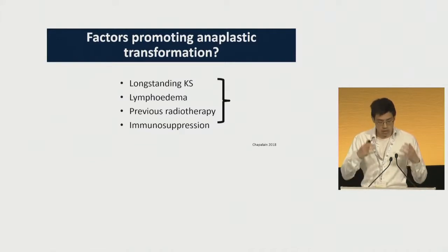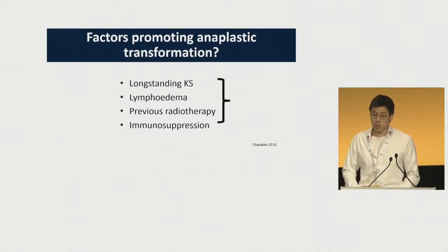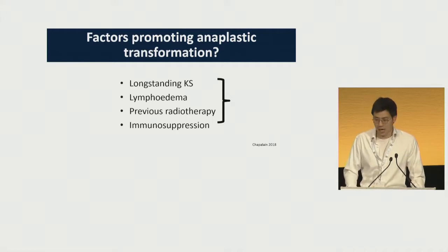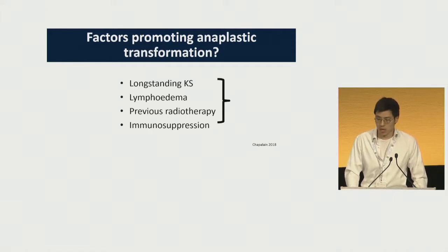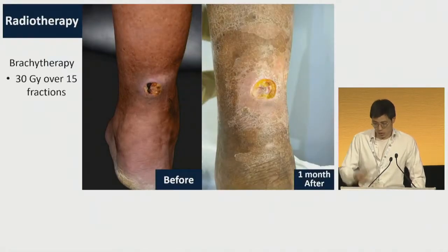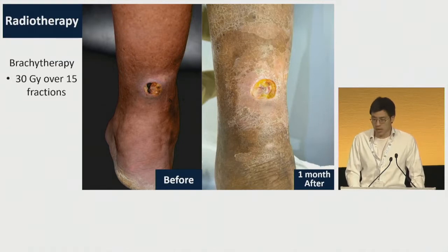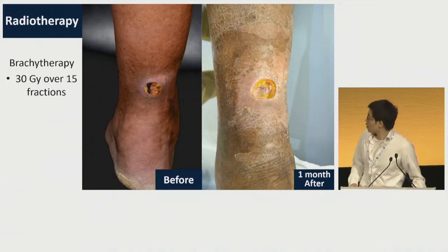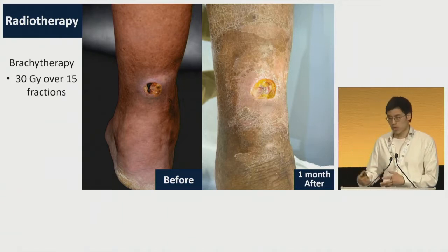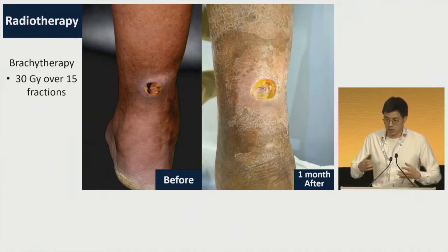The factors promoting anaplastic transformation drawn from cases and case series include long-standing KS, a background of lymphedema, previous radiotherapy, and prior immunosuppression. Our patient was treated with 30 grays of radiotherapy over 15 fractions. These are the before and one month after treatment pictures. In the picture on the right-hand side, you can see post-radiotherapy changes to the skin and radiotherapy-related ulceration.